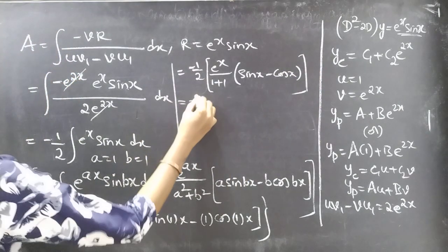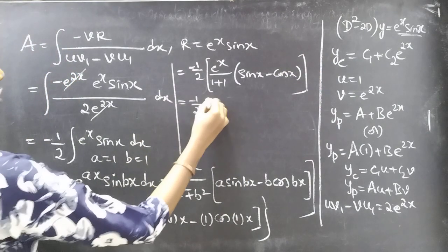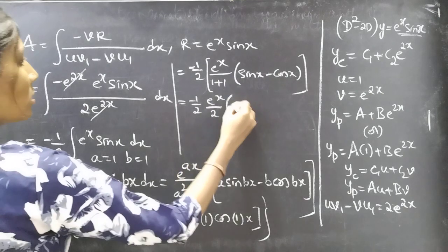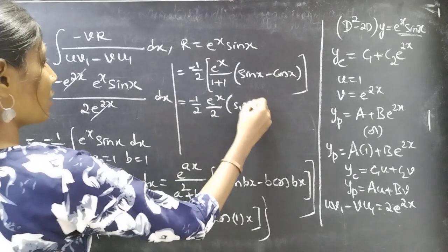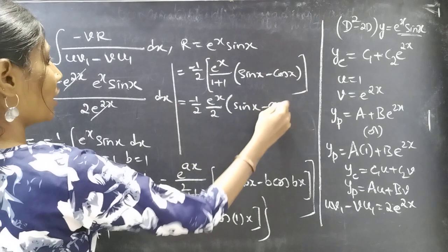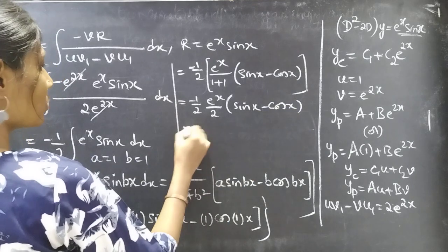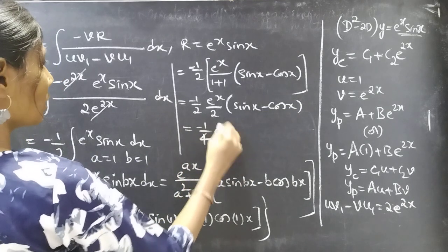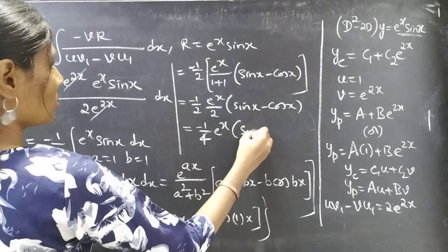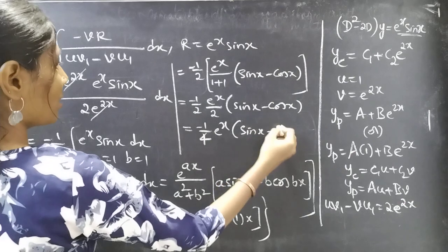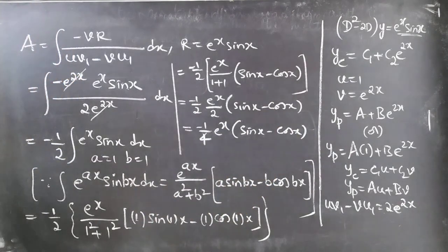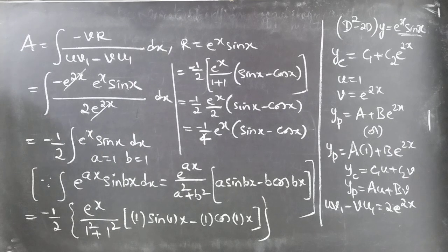This equals -1/2 · eˣ/(1+1) · (sinx - cosx) = -1/2 · eˣ/2 · (sinx - cosx) = -1/4 · eˣ(sinx - cosx). This is our required value of a.